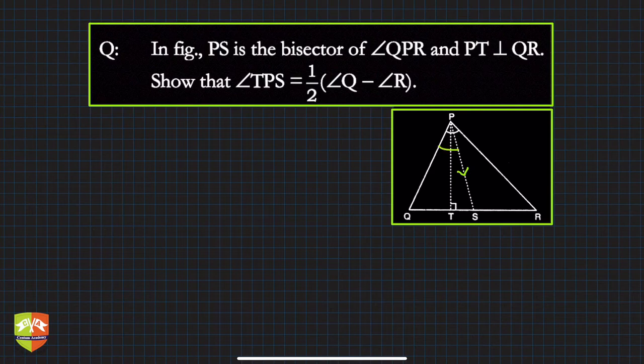The whole vertex angle ∠QPR, right? And PT is perpendicular to QR. We have to show that ∠TPS—let's mention the name—so ∠TPS is this angle, my friends, this angle. Let us call it x.